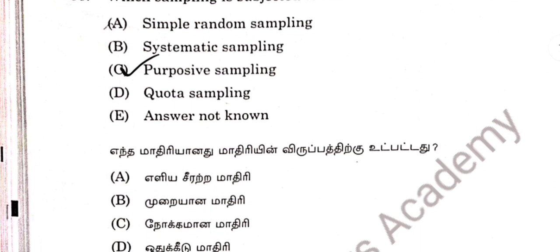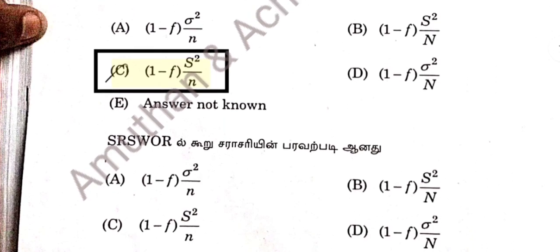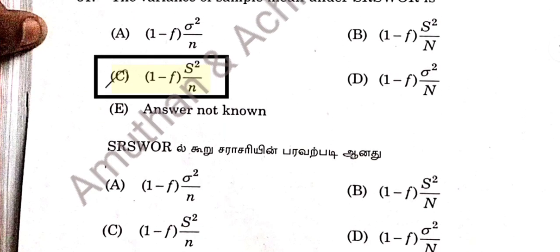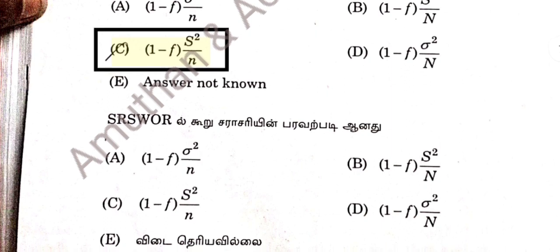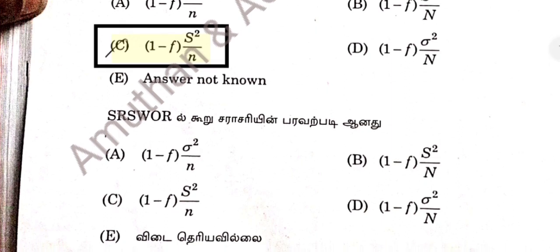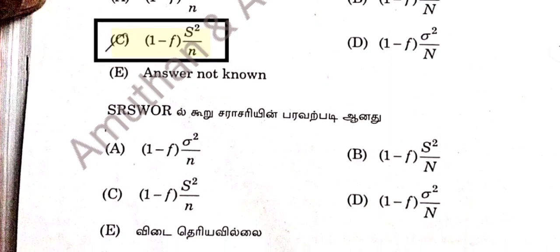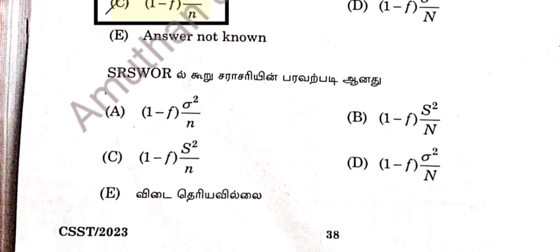Question 60: Purpose of sampling. Question 61: Option C. Purpose of sampling. The formula 1 minus F, S2 by small n. Option C is correct answer — the variance of sampling mean under this condition is noted.